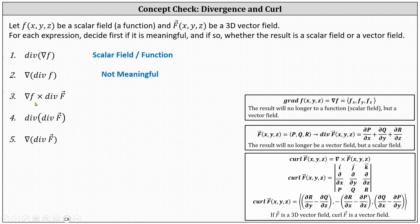Number three: the gradient of f is a vector field, but the divergence of the vector field F is a scalar field or function, and we cannot determine the cross product of a vector field and a scalar field. Number three is not meaningful.